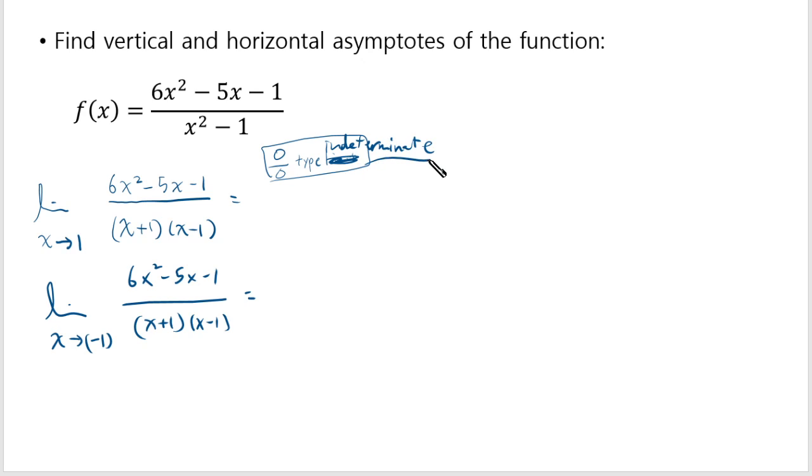Which means nothing. Which means that this could be something other than does not exist. If it was a finite number over 0 then you definitely know that the limit doesn't exist. And immediately you know that it should be a vertical asymptote. However, if it's 0 over 0 type there's still some possibility even if the denominator is 0 maybe the entire limit does exist. Now how would you know that?